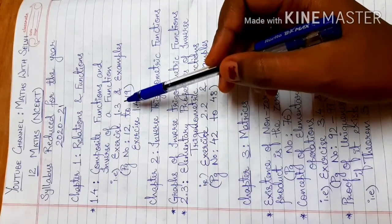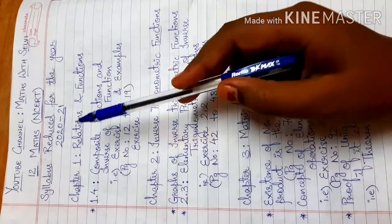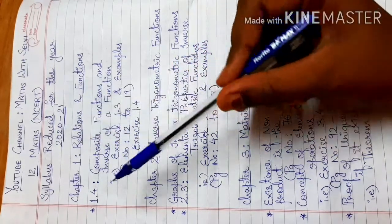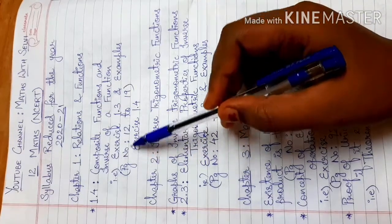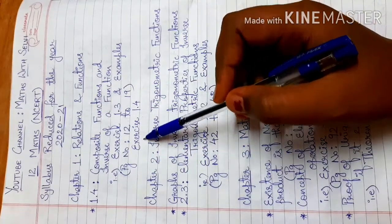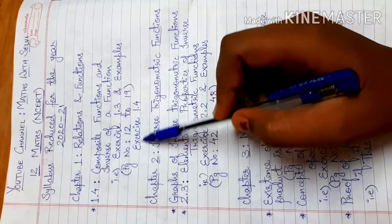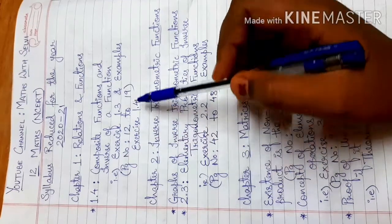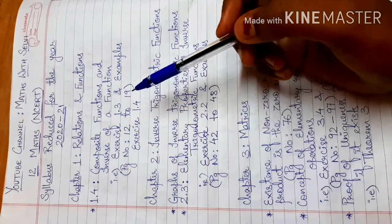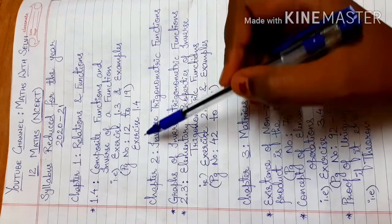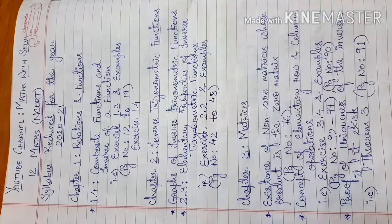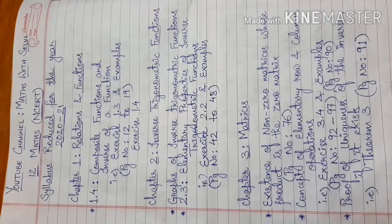This is only for the batch 2021. This is not in this syllabus — you have no Exercise 1.3. Page number 12 to 19. And Exercise 1.4 is Binary Operations exercise, which is also not in this syllabus for the last 2-3 years. So Exercises 1.3 and 1.4 are deleted.